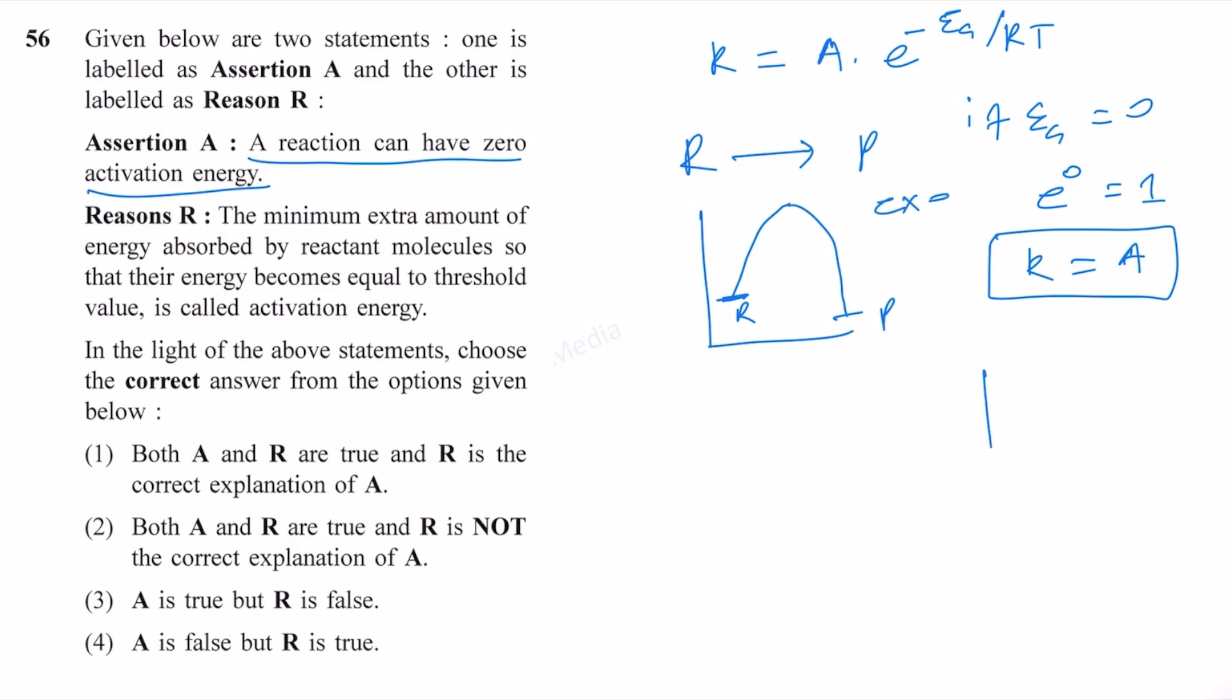If it is endothermic, then we will be having a product here. So, this is our activation energy. But if the activation energy itself is zero, then that means that we are starting from here, not from here. Therefore, we cannot distinguish between reactant and product.